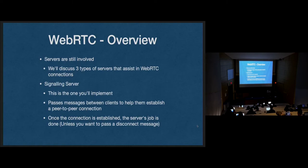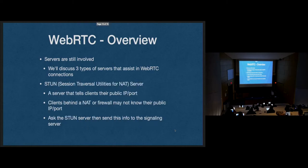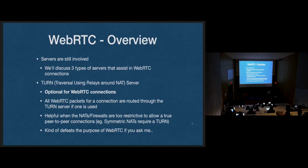We're going to talk about a few servers. There are three types: the signaling server, which communicates between the two peers while the connection is being established; a STUN server, which lets the peers know their public IP address and port number; and a TURN server, which is optional for WebRTC connections but may be required if your firewall and NAT are too strong, routing all peer-to-peer traffic through that server.